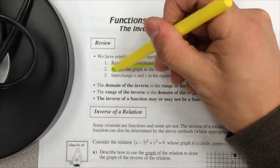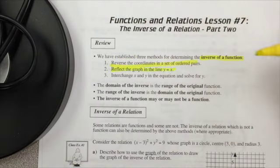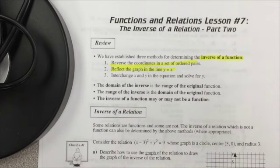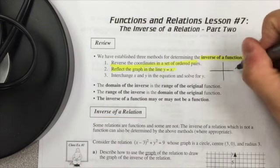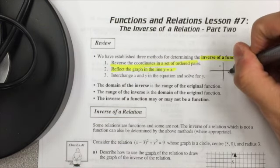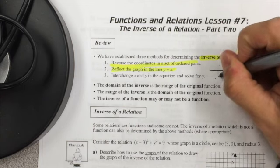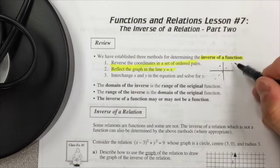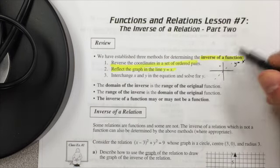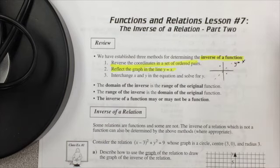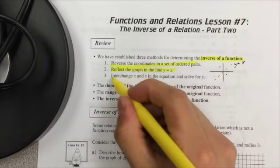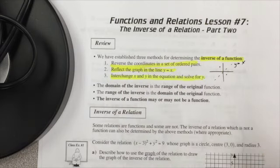Another method, if we were drawing the graph, was to reflect the line at y equals x. So if we had a point and this is my equation y equals x, I would just reflect that and my new point would go right there. And then if we were given the equation, we just interchange x and y values and solve for y.